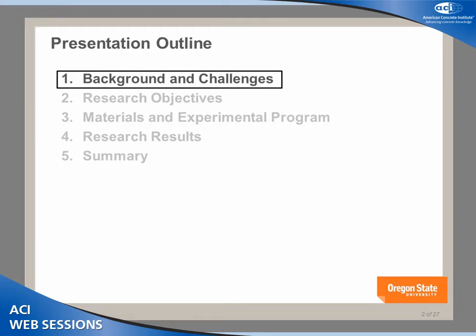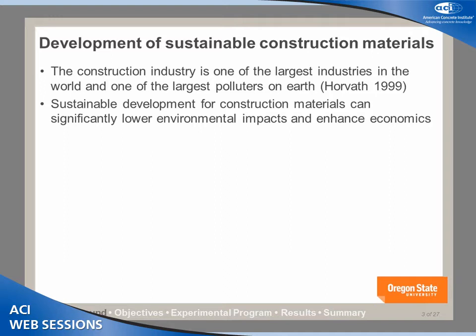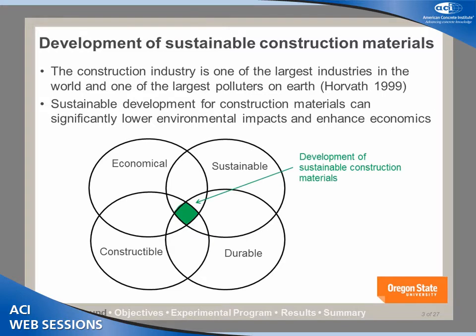Let's start with the background and challenges. The development of sustainable construction materials is important because the construction industry is one of the largest industries in the world and also one of the largest polluters on earth. If we can improve the sustainability in construction materials, it's going to significantly lower the environmental impact and also reduce the cost. There are four factors we need to consider to make construction more sustainable: not only sustainability, but also cost, durability, and constructability of the materials.